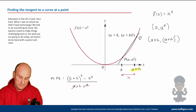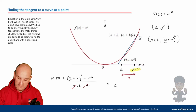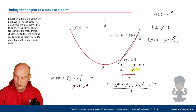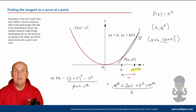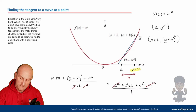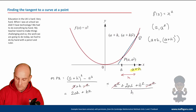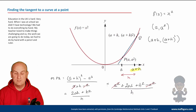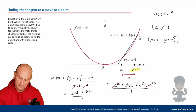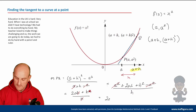Multiplying out the top, we get A² + 2AH + H² minus A², all over H. The A² and minus A² cancel — that first term should always cancel. So we have 2AH + H² over H. There's an H in every term on top, so one H cancels, giving us the gradient of the secant as 2A + H.